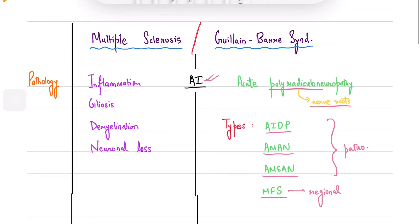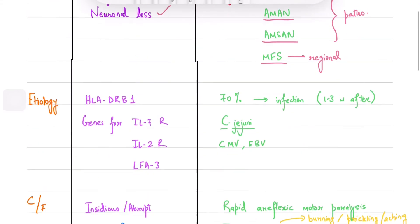MS is also autoimmune, characterized by inflammation, gliosis, demyelination, and neuronal loss.